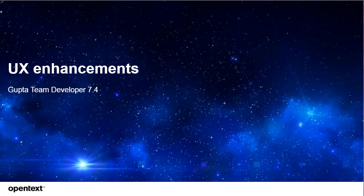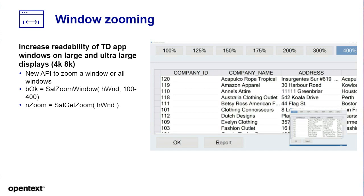What user interface enhancements do we have in Gupta Team Developer 7.4? We are introducing window zooming, requested by many users. As users are moving to 4K, 6K, and 8K displays, some things are necessary to adapt. Some users might like to increase the font size. Window zooming is quite handy for that. We did introduce control anchoring with 7.3, which increased the amount of information you can see in a window when you increase window size. But now you can do both.